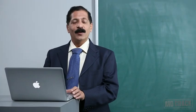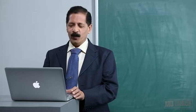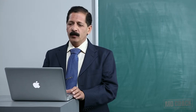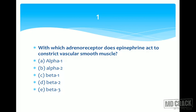Welcome to pharmacology MCQs. Let's start with question number one: With which adrenoceptor does epinephrine act to constrict the vascular smooth muscle? The options are alpha-1, alpha-2, beta-1, beta-2, and beta-3.